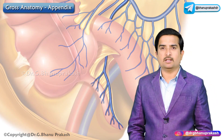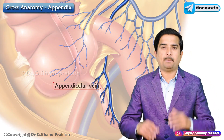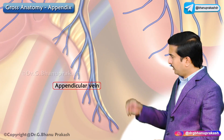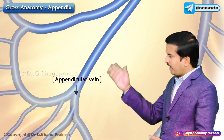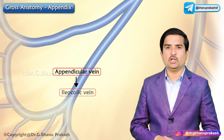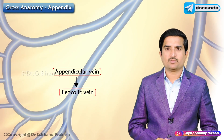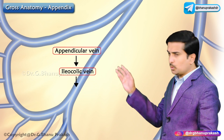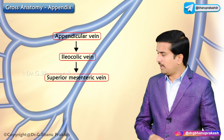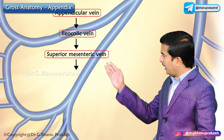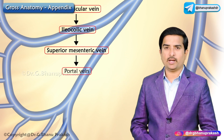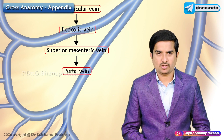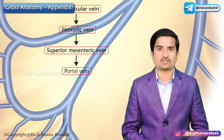Regarding venous drainage, the appendix is drained by the appendicular vein, which drains into the ileocecal vein, from there into the superior mesenteric vein, and finally into the portal vein.